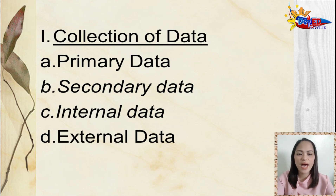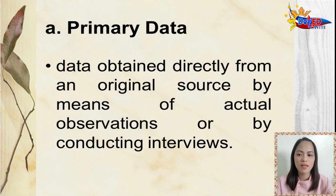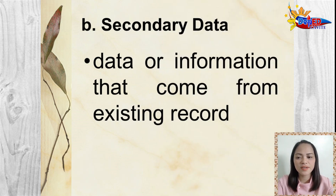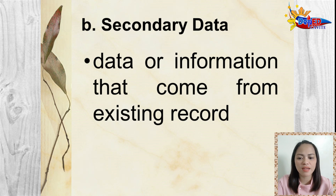Under collection of data, we have primary data, secondary data, internal data, and external data. Primary data are data obtained directly from an original source by means of actual observations or by conducting interviews — data collected by a researcher from first-hand sources. Secondary data are data or information that come from existing records, in usable form that can be taken from journals, publications, thesis, and dissertations.